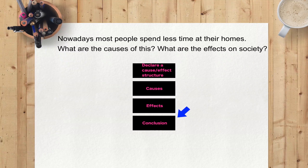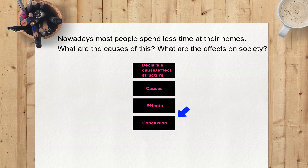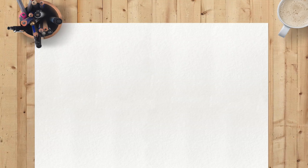The conclusion paragraph could be a simple recommendation for the future of this situation. If the writer concludes it is a positive trend, recommending future growth of this trend would be appropriate. Or if it is a negative trend, recommending some sort of change would also be an appropriate close to the essay.